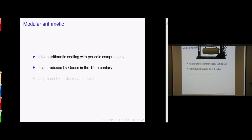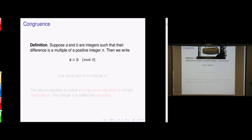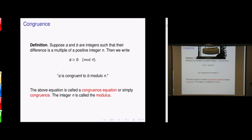Modular arithmetic was first introduced by Gauss in the 19th century, and it is very similar to ordinary arithmetic. The definition introduces a relation called the congruence relation between integers. Suppose a and b are integers such that their difference is a multiple of a positive integer n. Then we write this as: a is congruent to b modulo n. This mod is a shorthand for modulo. The integer n is called the modulus.